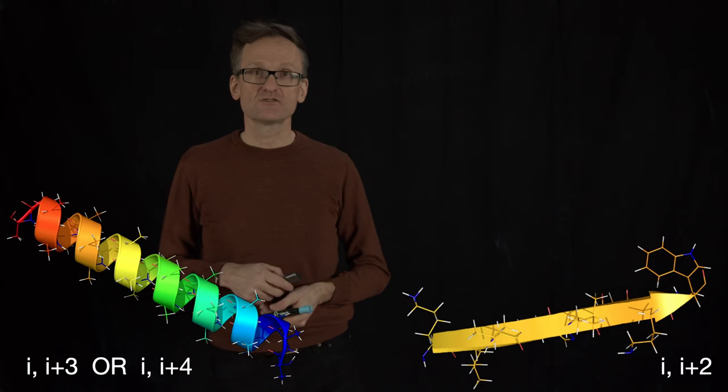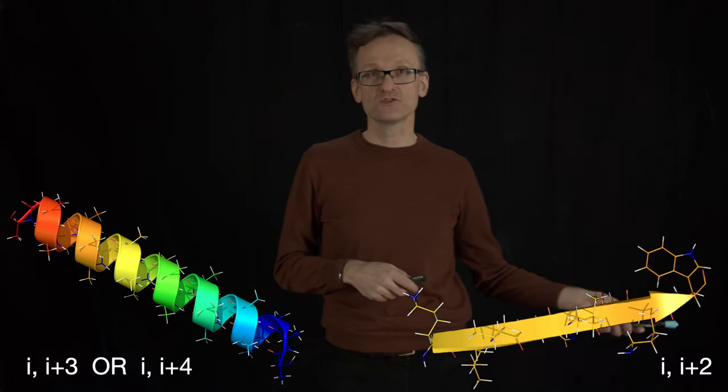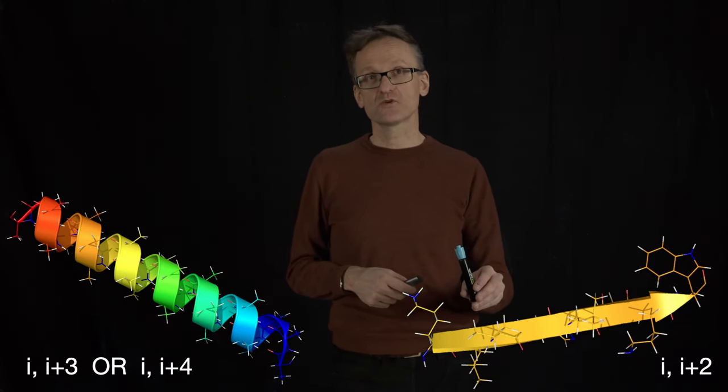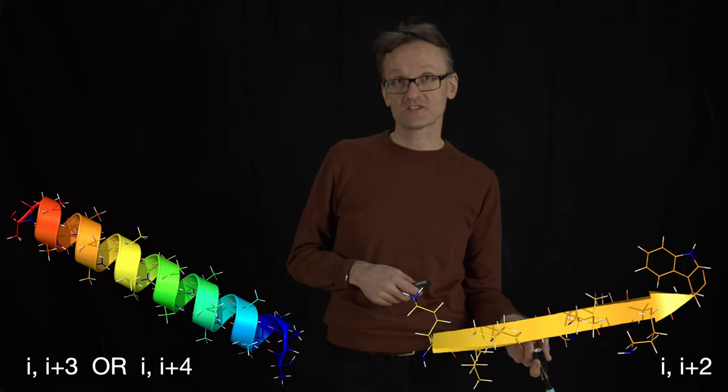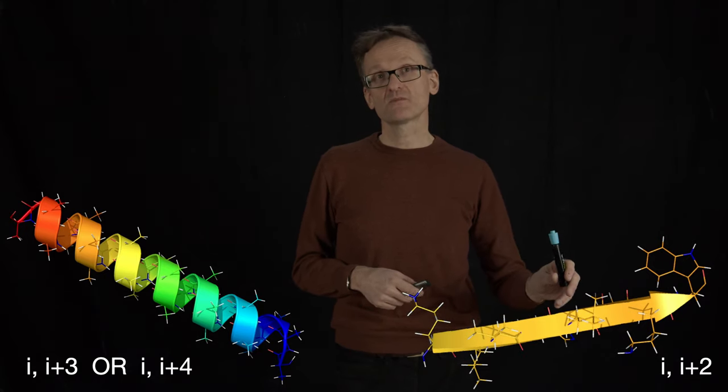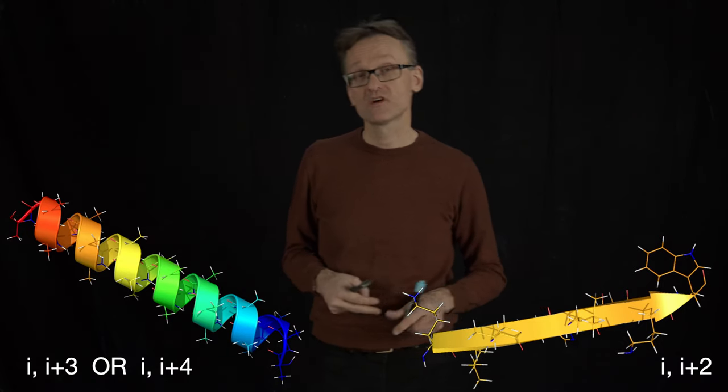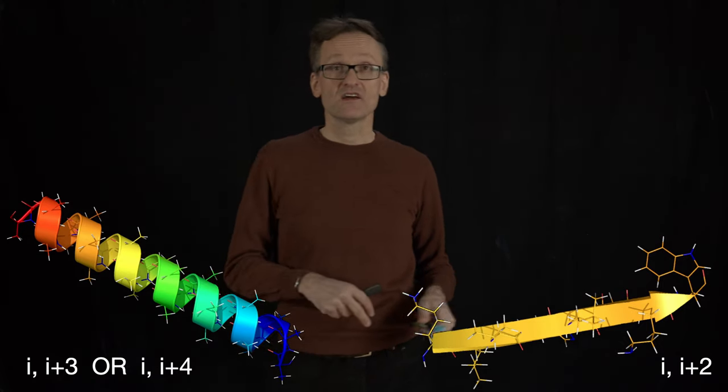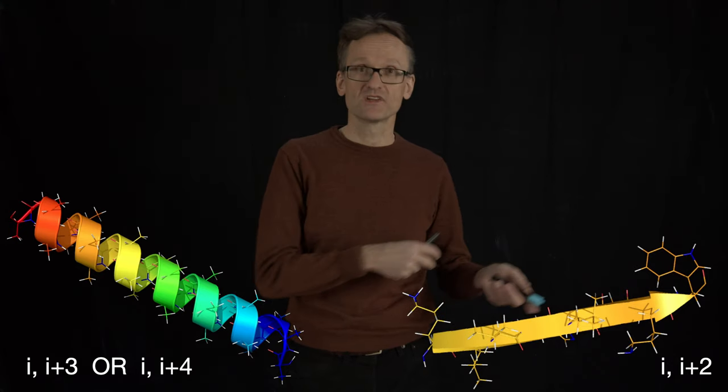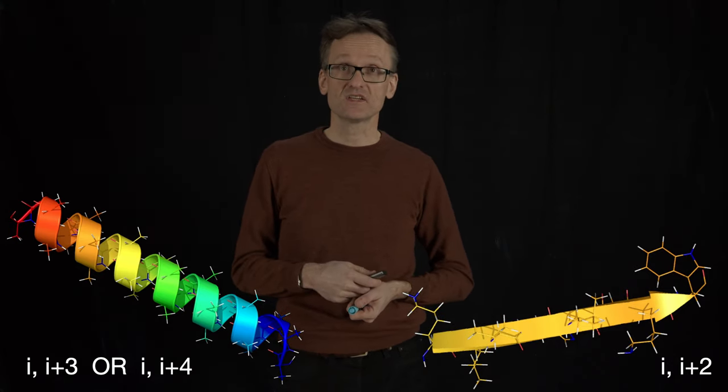Similarly in a beta sheet, you have some sort of i to i+2 units because here a side chain is pointing up, then it's pointing down. That's two amino acids and now I'm pointing up again. So after two amino acids, I'm back to roughly the same place. So maybe 3.5 units of a repeat here and 2 units of the repeat in the beta sheet.